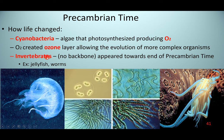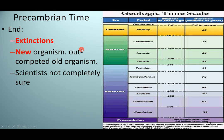An important life form from the Precambrian is cyanobacteria — the first organism to start producing O2. It created the ozone layer (O3), which blocked UV radiation and allowed more complex life forms to evolve. We had a lot of invertebrates — organisms with no backbones — so you started to see things like jellyfish and worms during this Precambrian time. Very simple life forms, nothing too complex yet.